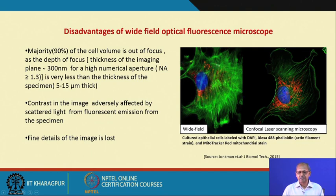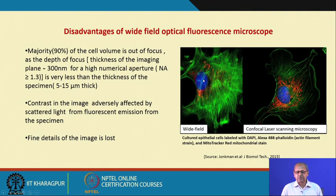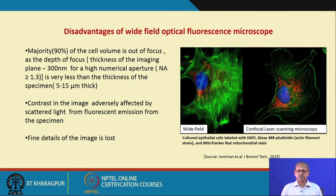As an example, an epithelial cell labeled with DAPI for the nucleus, MitoTracker for mitochondria, and Alexa 488 for actin filaments is shown. This image was captured by wide-field microscopy. For epithelial cells where thickness is very small — around 3 micrometers — the image is reasonable, but if the specimen is 5 to 15 micrometers thick, you get a very hazy image.